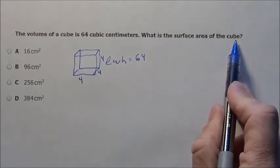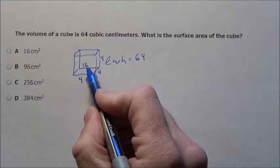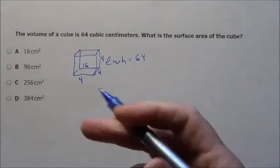Now it wants to know the surface area of the cube. Well, this is 4 by 4, so each of these faces is 16, no matter which way I spin.